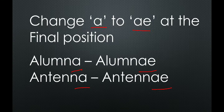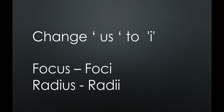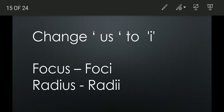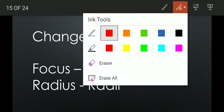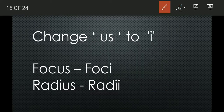Change A to AE at the final position of a word: alumna → alumnae, antenna → antennae. Next, change US to I at the final position: focus → foci, radius → radii.